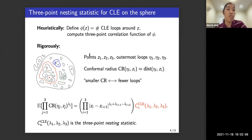So today the quantity I'm interested in is a three-point nesting statistic of CLE on the sphere. So informally we want to define the CLE nesting function phi as follows. We let phi of z be the number of loops surrounding the point z. And then this gives us a random function phi, and we want to understand the joint law of phi at three different points.